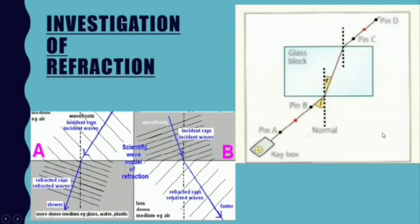In the laboratory investigation we use a ray box and a rectangular glass block. Optical pins A, B, C, and D are used: pins C and D are placed so they are in line with the images of pins A and B seen through the block, then used to locate where the ray exits the glass block. The investigation shows that a light ray directed along the normal passes straight through without being refracted.